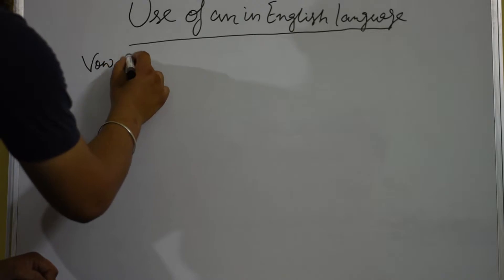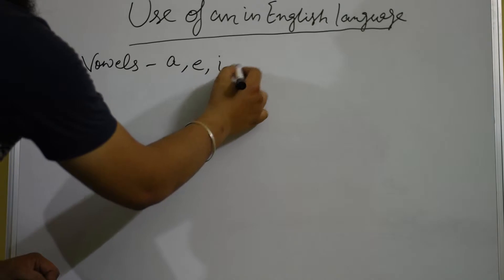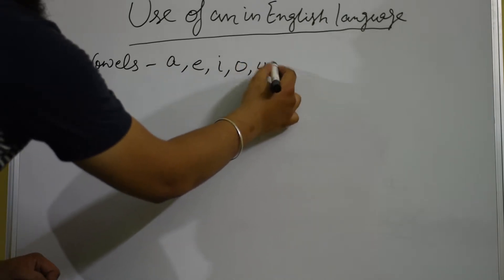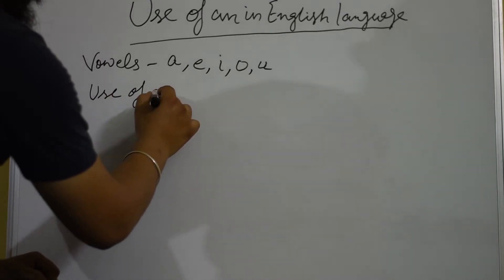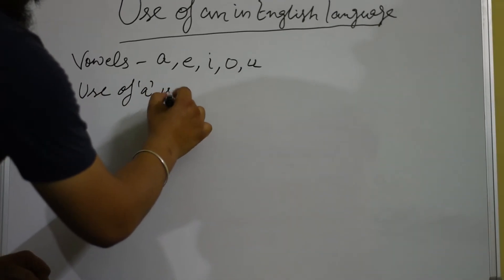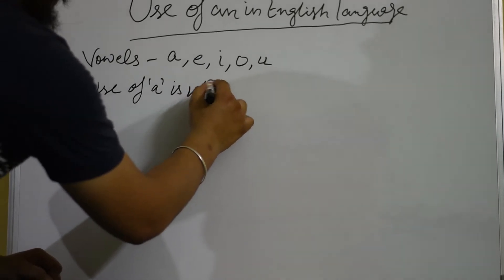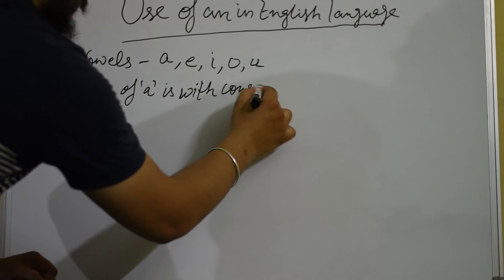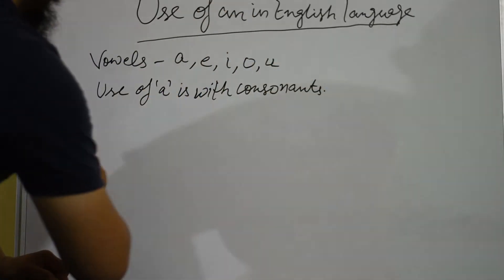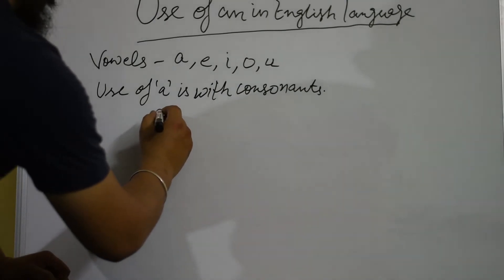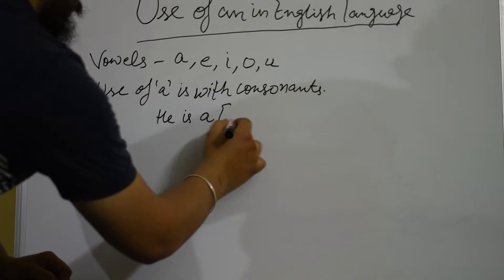But in reality, it is the sound of the initial letter that matters. For example, in the sentence 'he is a European', as we can see, it starts with 'e' and we use 'a' with it.